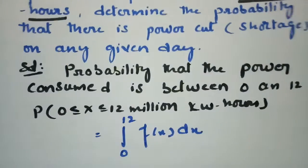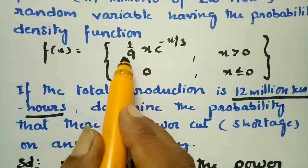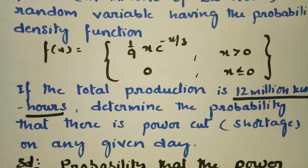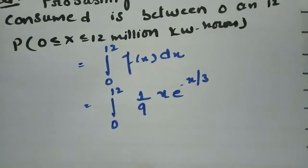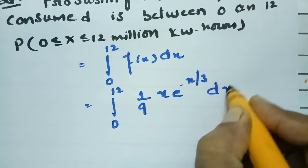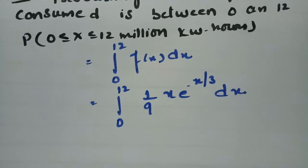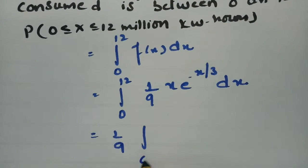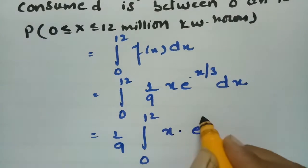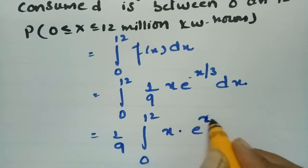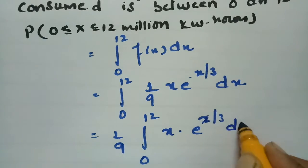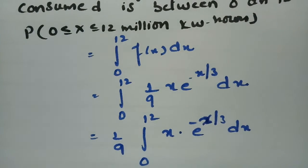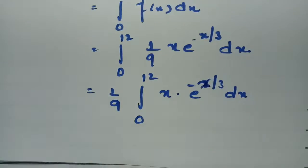The function value is f(x) = (1/9)·x·e^(-x/3), so the integral becomes ∫₀¹² (1/9)·x·e^(-x/3) dx. Now we have to use integration by parts. Taking (1/9) outside, between the limits 0 to 12, we have x·e^(-x/3) dx, where u = x and v = e^(-x/3).